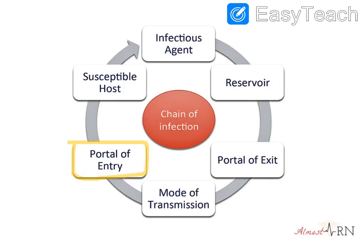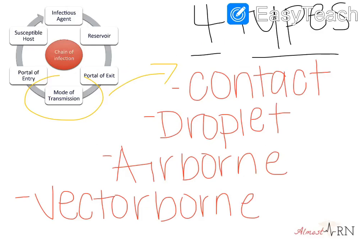Once out, the germ needs a portal of entry — somewhere to go. That's the same as the portal of exit: it could be the respiratory tract, skin, or a mucous membrane. Then it needs a susceptible host. My biggest example is a nursing student — someone with a compromised defense mechanism. We're tired, not eating or drinking adequately, and very stressed out, which makes us susceptible.